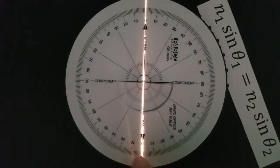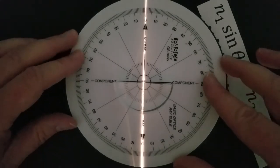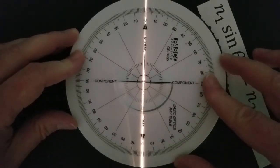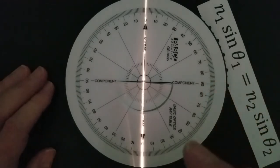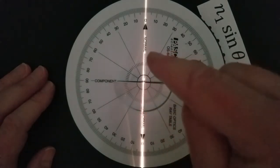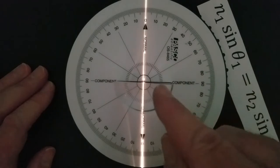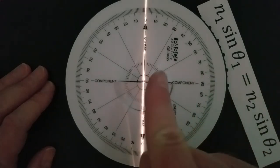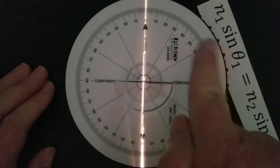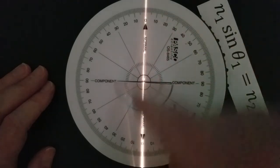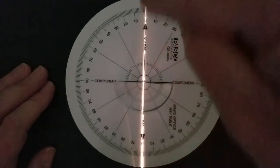Now we can get the measurements of the angle from the disc here, and as I turn it, as light goes from a more optically dense material to a less optically dense material, the beam of light is going to change direction and bend away from the normal. The normal is the line perpendicular to the surface, and right now the beam of light is following the normal.